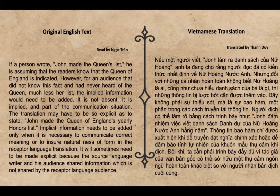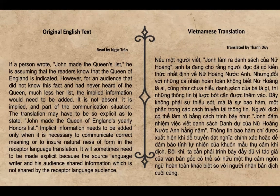If a person wrote 'John made the Queen's list,' he is assuming that the reader knows the Queen of England is indicated. However, for an audience that did not know this fact and had never heard of the Queen, much less her list, the implied information would need to be added. It is not absent — it is implied, and part of the communication situation. This translation may have to be so explicit as to say, 'John made the Queen of England's yearly honour list.' Implicit information needs to be added only when it is necessary to communicate correct meaning or to ensure naturalness of form in the receptor language translation.